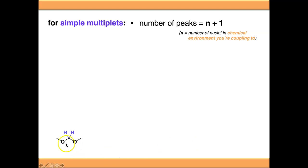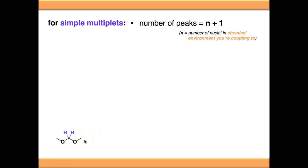Looking at this molecule, we're considering the signal for the purple protons. There are no other protons in different chemical environments within range for coupling — oxygens block the adjacent positions and the methyl groups on the end are too far away. So the number of nuclei in the chemical environment we're coupling to is 0, and 0+1 gives us a single peak: a singlet.